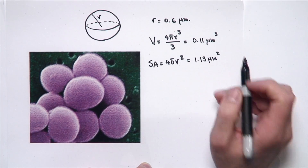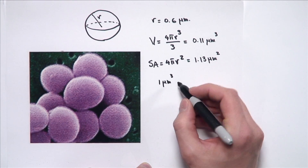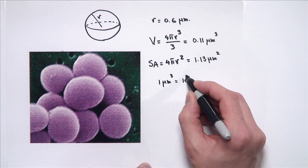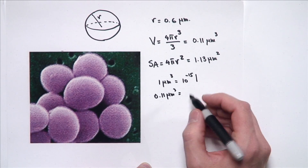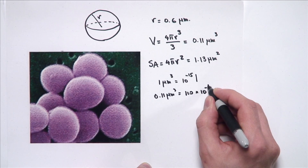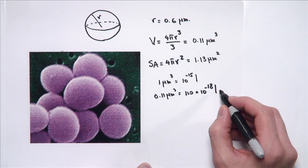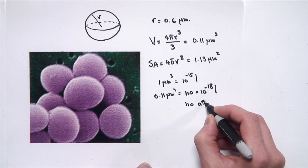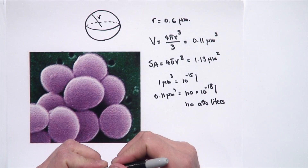Now, 0.11 cubic microns — as we said, one cubic micron is one femtoliter, that is 10 to the minus 15 liters. So 0.11 cubic micrometers is 110 times 10 to the minus 18 liters. The prefix for 10 to the minus 18 is atto, so it's 110 attoliters. This is an incredibly small volume. By calculating the volume and surface area of these cells, we've essentially answered parts one and two of this problem.